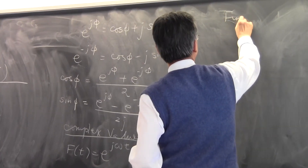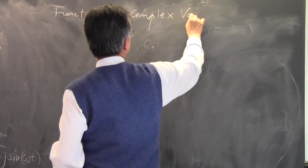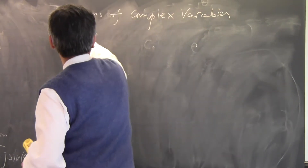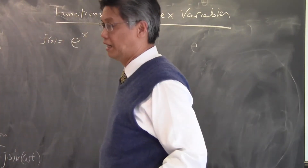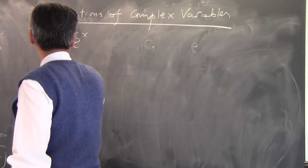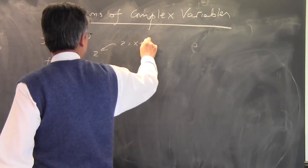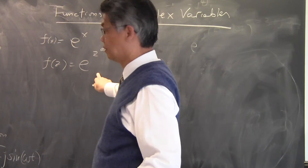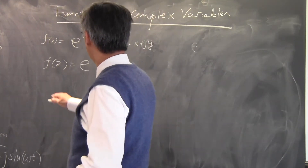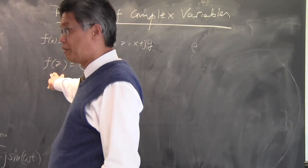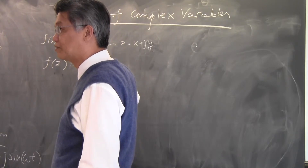Then there are functions of complex variables — for example, e^x is a function of a real variable, but we can extend this concept to make it a function of a complex variable Z = X + jY. These are called functions of complex variables, and there is a lot of theory about them. If you were to plot these functions, both the function itself and the variable have real and imaginary parts, so they are quite difficult to plot.